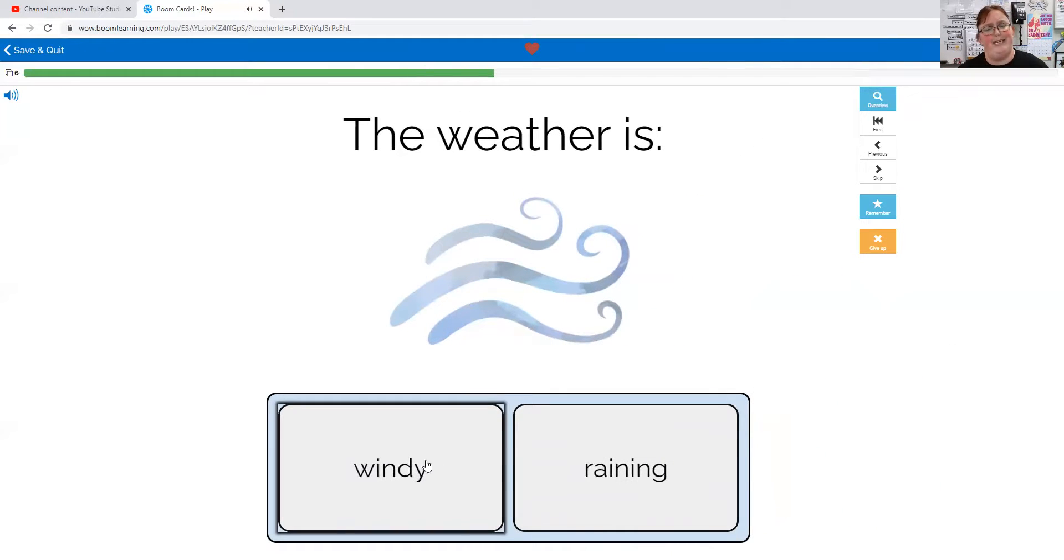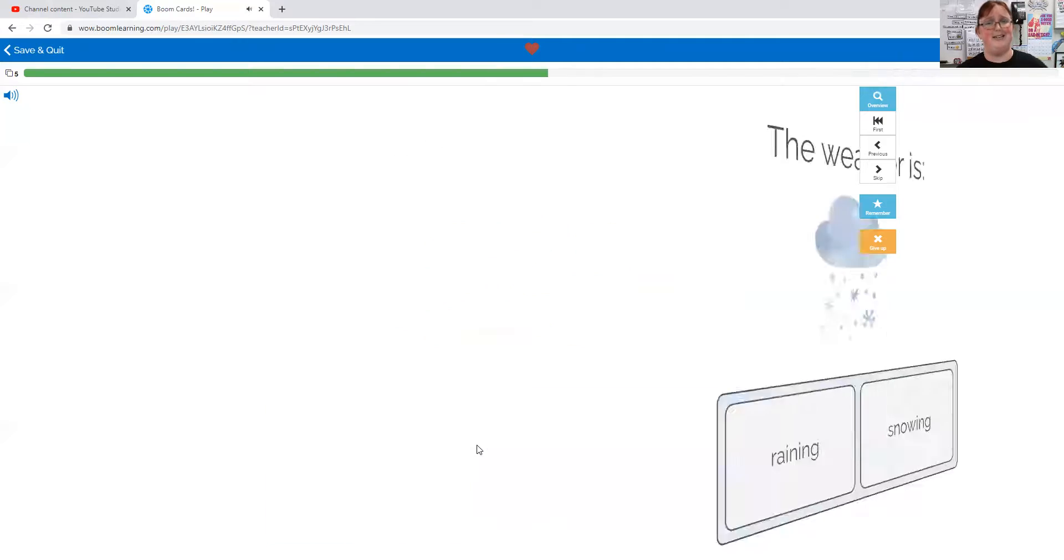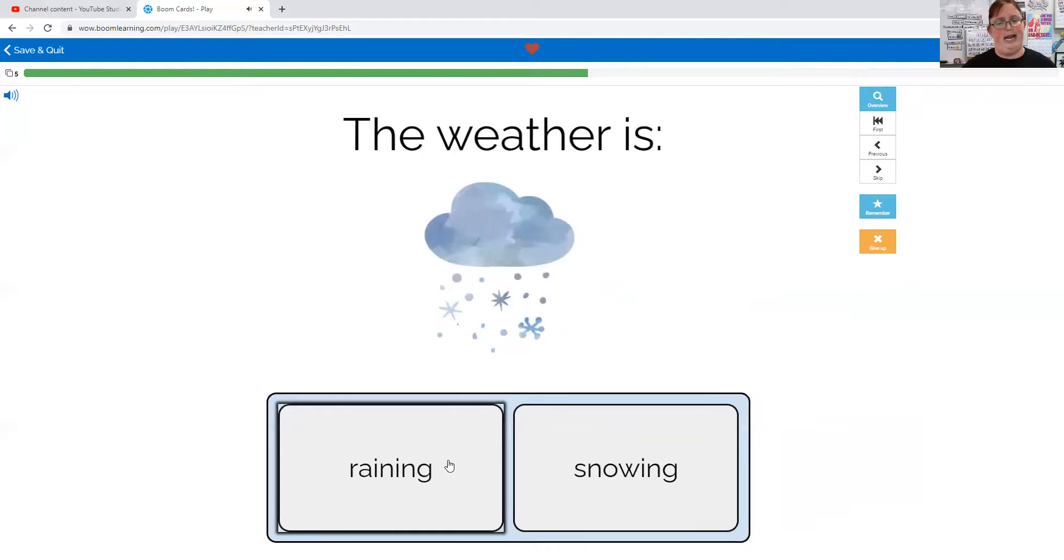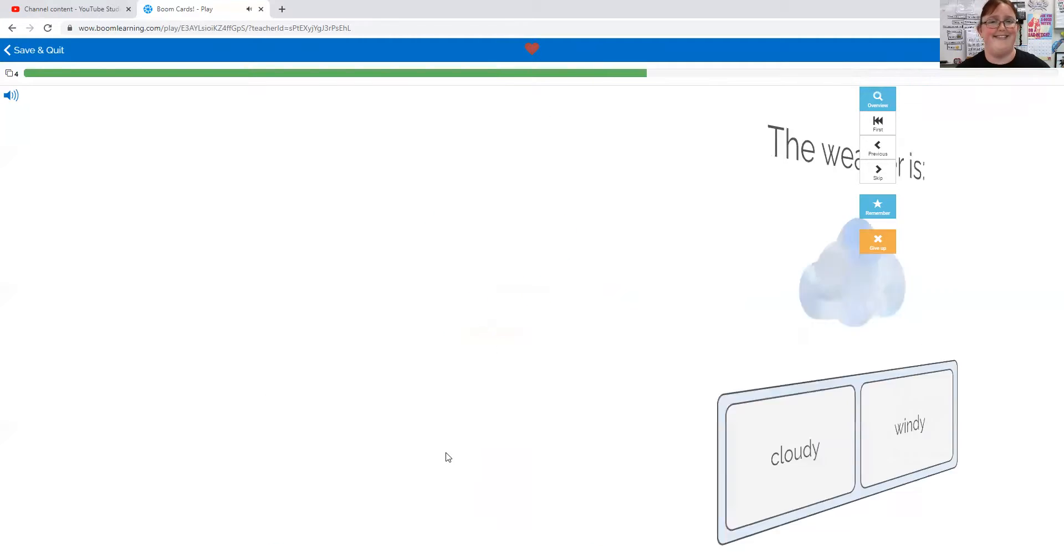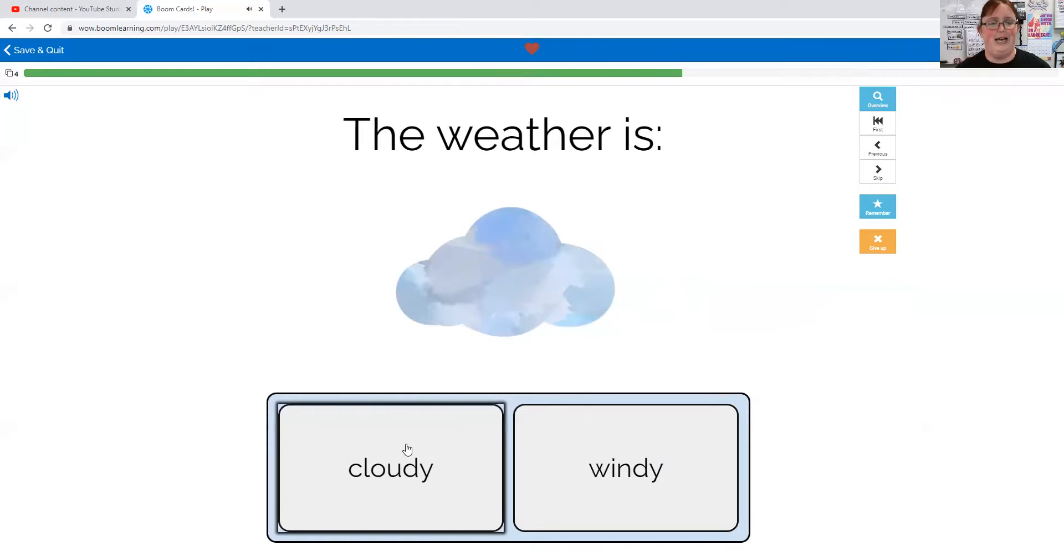The weather is windy or raining. I don't see any rain in this picture, it's windy. The weather is raining or snowing. These shapes are supposed to indicate snow, it's snowing. The weather is cloudy or windy. That's a cloud, yeah.